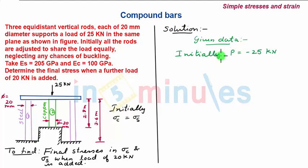Initially the load applied is 25kN. Due to this load there will be some stresses and as per the given problem the stresses are equal in copper and steel rod. Also there will be some deformation. Finally the total load becomes 25 + 20kN equal to 45kN due to the addition of extra 20kN load.